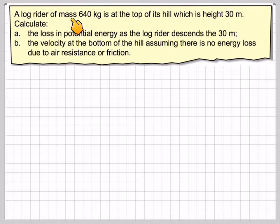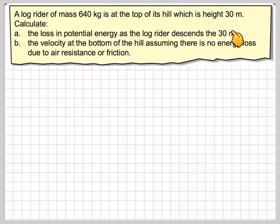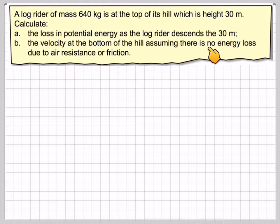A log rider of mass 640 kilograms is at the top of its hill, which is at a height of 30 metres. Calculate the loss in potential energy as the log rider descends the 30 metres, and (b) the velocity at the bottom of the hill, assuming there's no energy loss due to air resistance or friction.